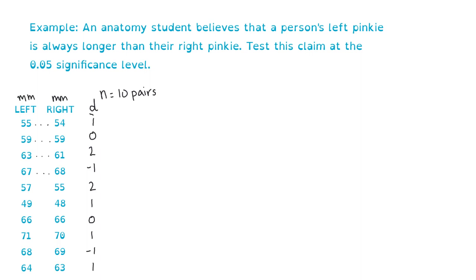From all of these d values, we can calculate some sample statistics. The first is the sample average of these 10 d values, which we call x-bar sub d — the sample average of the differences. When I calculate that using StatDisk, I get 0.6. So the sample average is 0.6, meaning that of these 10 people, their left pinky is 0.6 millimeters longer than their right pinky. We also calculate the sample standard deviation of the differences, which is 1.07. We need these sample statistics to calculate our test statistic.